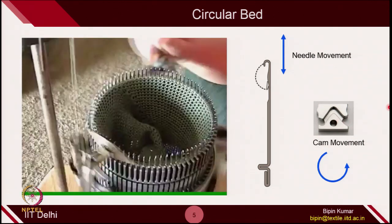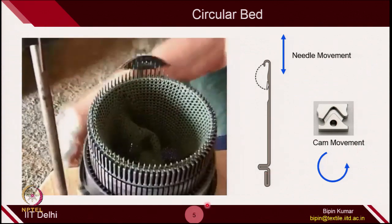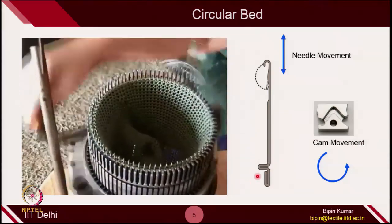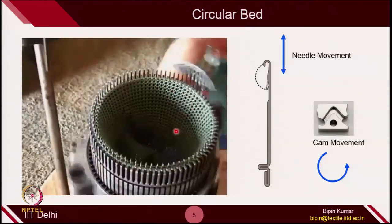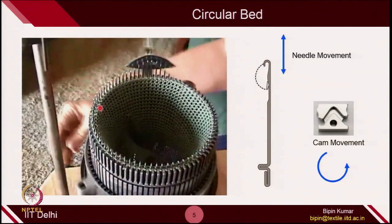Here you can see how it works. The cam is rotating on the curved parts and because of this the needle is going up and down and making the fabric. The fabric is pulled from the downward direction — you can see the green color yarn. The movement of needle and cam remain perpendicular: the needle moves in vertical directions while the cam is rotating on a horizontal platform in a circular fashion. This is how the circular bed or circular knitting is designed.